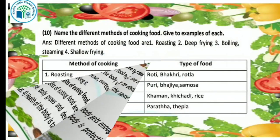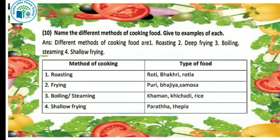Our next question: give two examples of each different method of cooking food. Different methods of cooking food are: roasting — roti, rotla; deep frying — puri, bhajiya, samosa; boiling and steaming — khichdi, rice; and shallow frying — paratha, thepla.